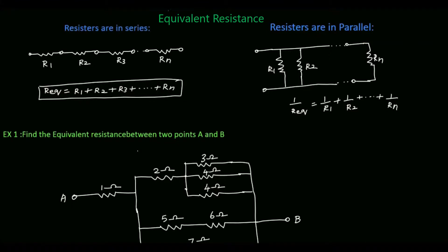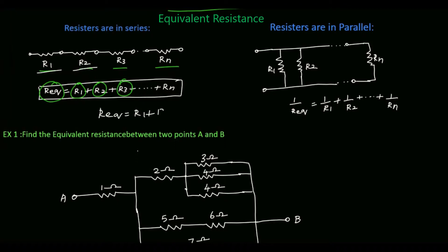In this tutorial, we will see how to calculate equivalent resistance between the terminals. In this circuit, the resistors R1, R2, R3 up to Rn are connected in series. So for a series connection, the equivalent resistance R_equivalent is equal to the sum of all the resistances: R1 plus R2 plus R3 up to Rn. Suppose only R1 and R2 are connected in series, then R_equivalent will be R1 plus R2.